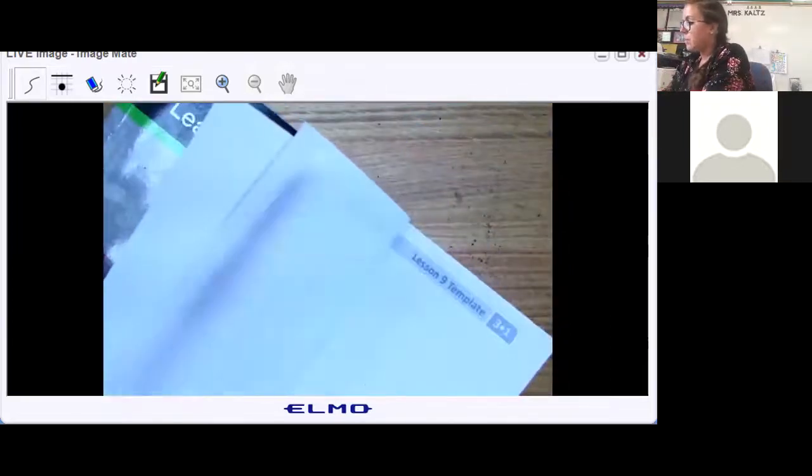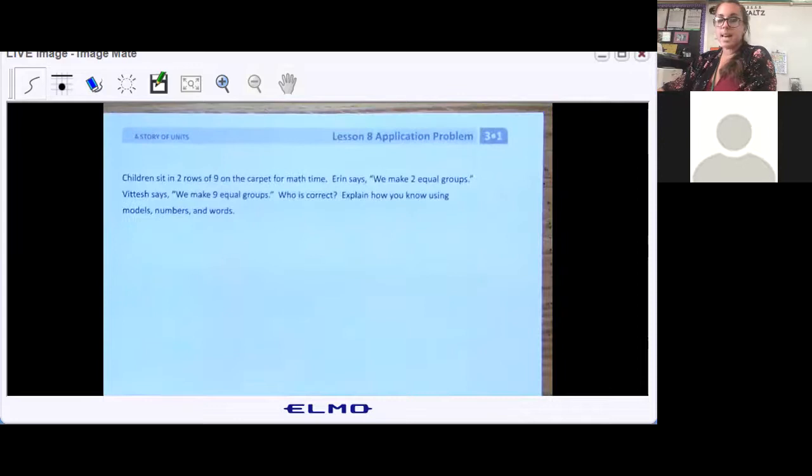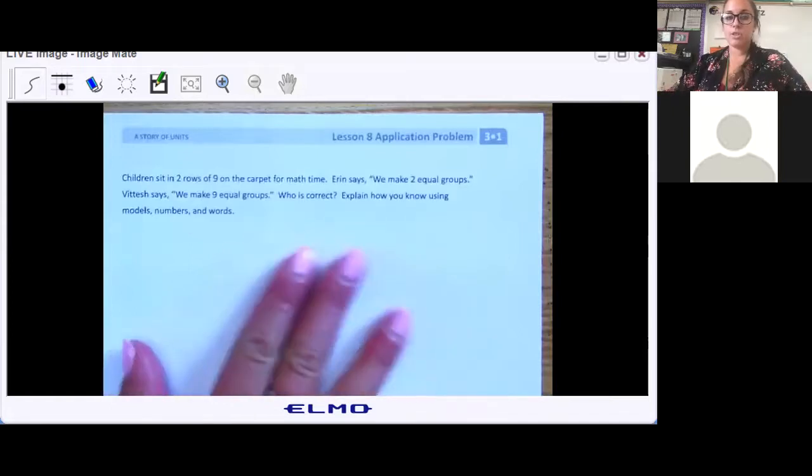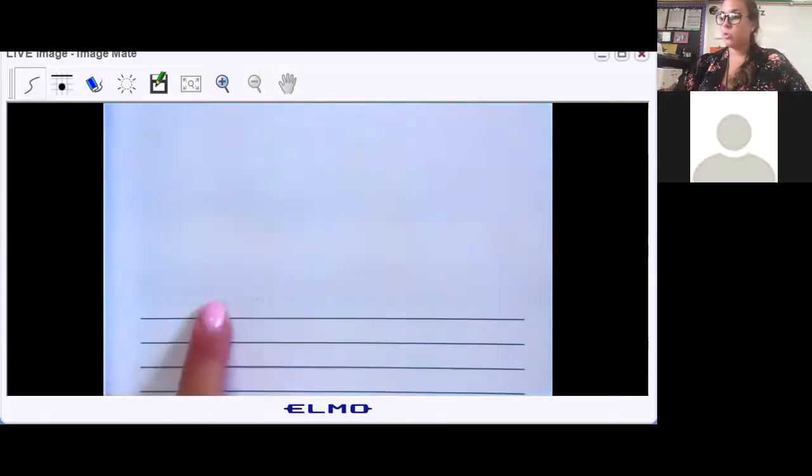And I want you to try the application problem on your own. It says children sit in two rows of nine on the carpet for math time. Erin says we make two equal groups. Fatish says we make nine equal groups. Who is correct? Explain how you know using models, numbers, and words. So I would like you to try it. You're going to draw it out, think about how you would write the multiplication sentence, and then at the bottom you need to tell me who is correct.